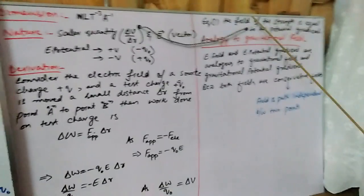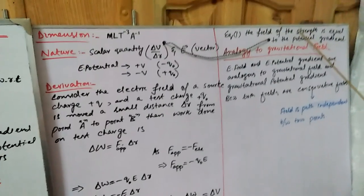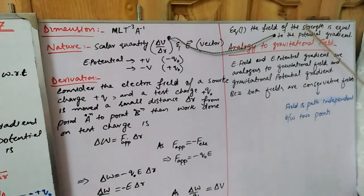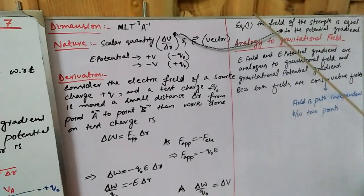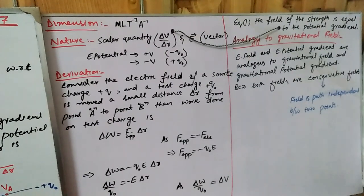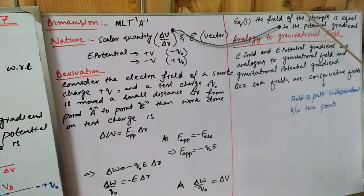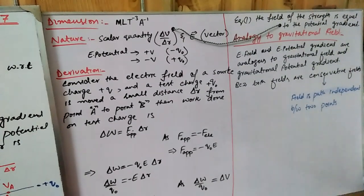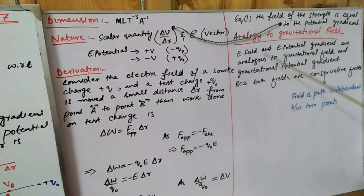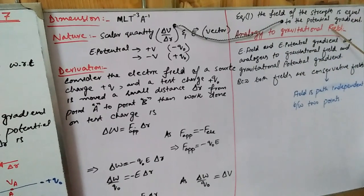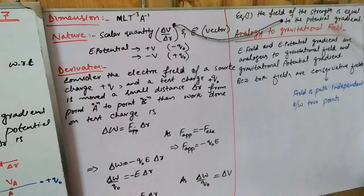Equation 1 represents the strength of the field, which equals the potential gradient.